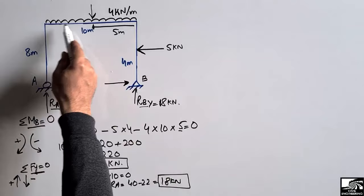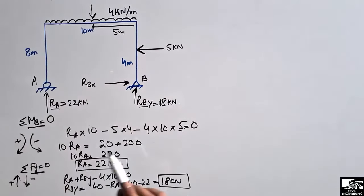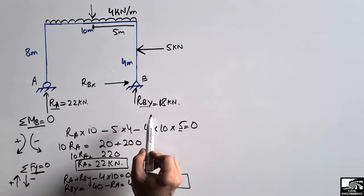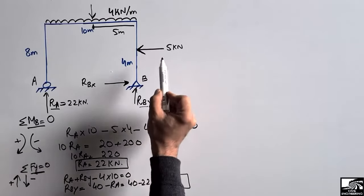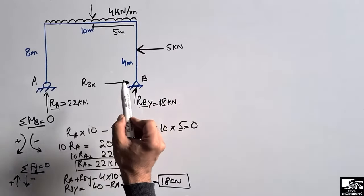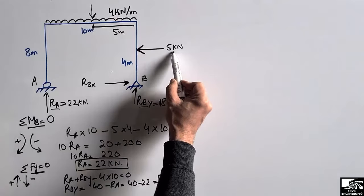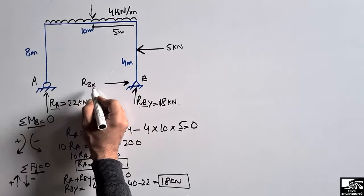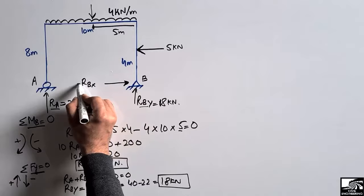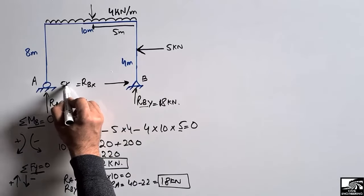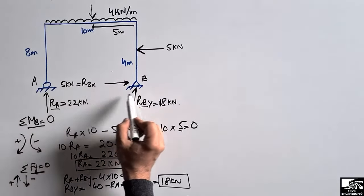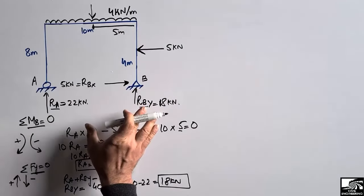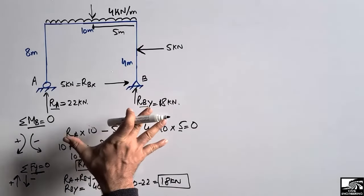We can verify: 22 + 18 = 40 kN, which equals the total load on the beam. For the horizontal reaction, there is only one support capable of resisting horizontal loads. Therefore RBX = 5 kN, directly transferred to the hinge support.